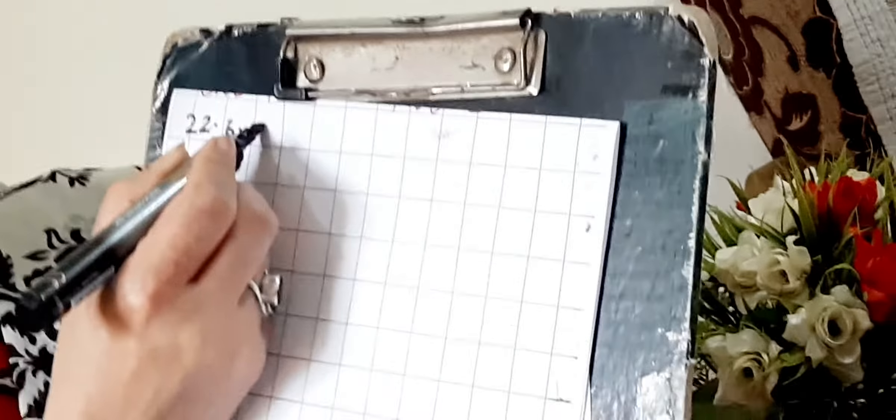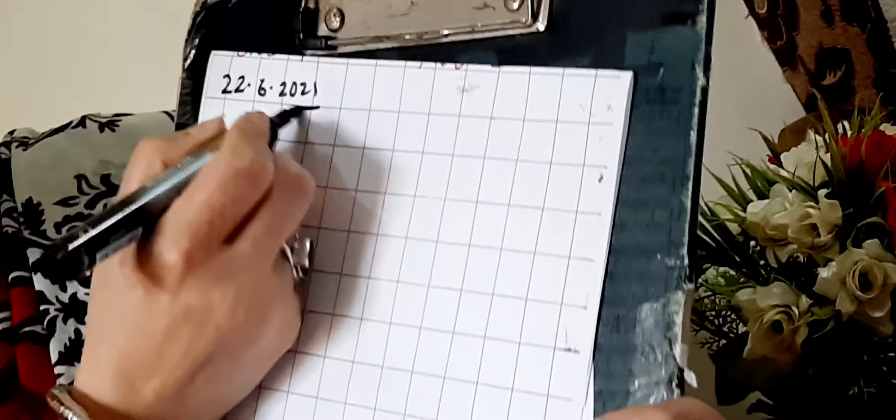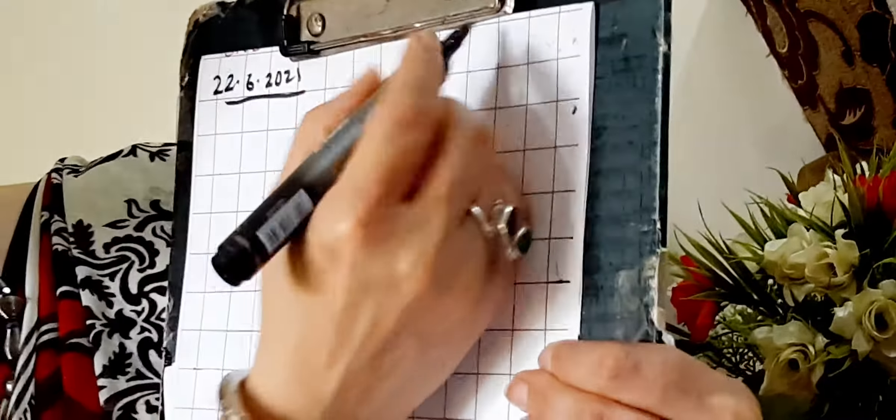My dear children, today we are going to write the spellings of 1 and 2 in your notebook. Let's see how I have written in my book. Your first job is to write today's date. What is the date today? It is the 22nd — 6/21. Give a proper heading: C.W.